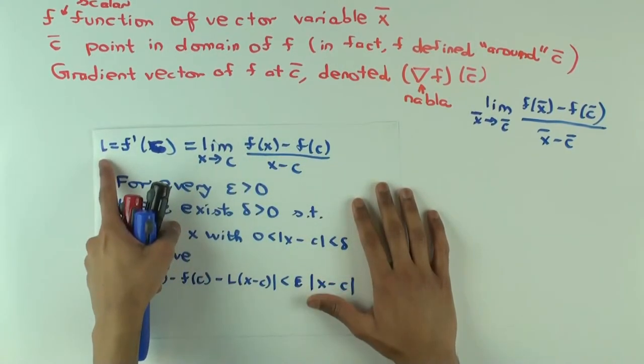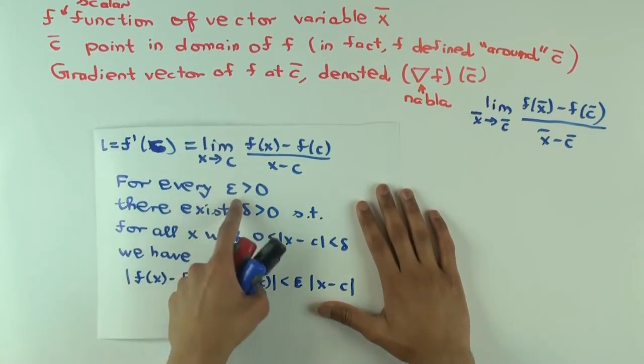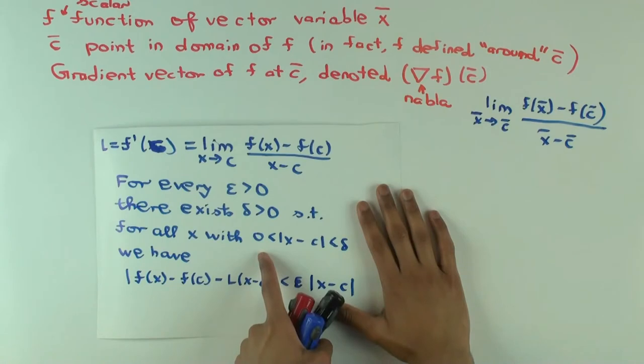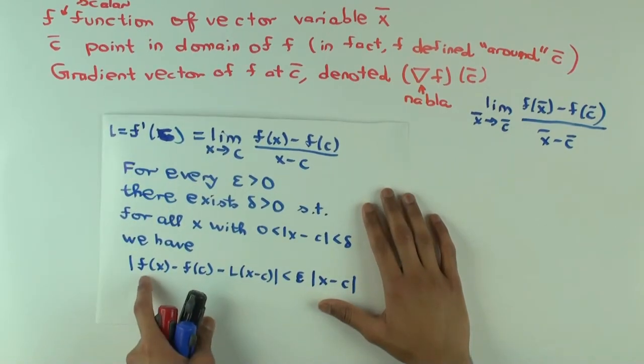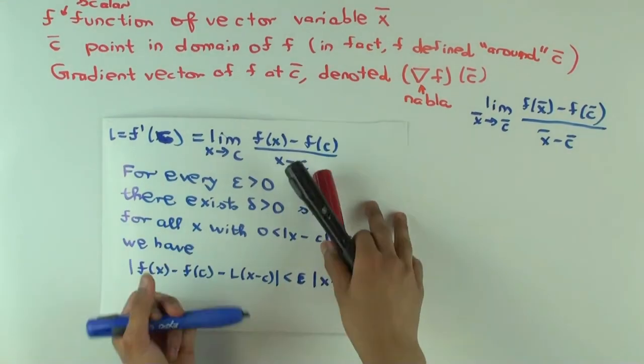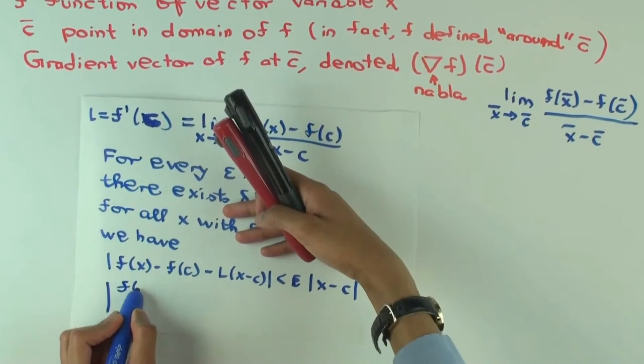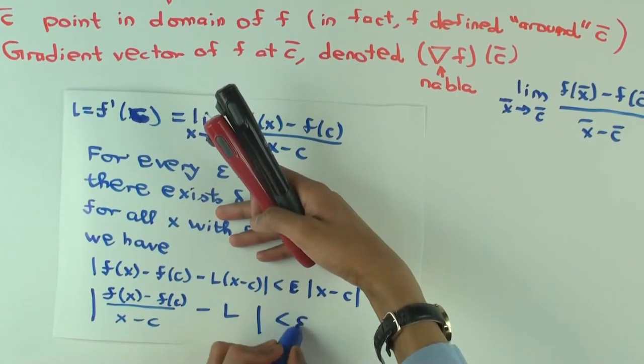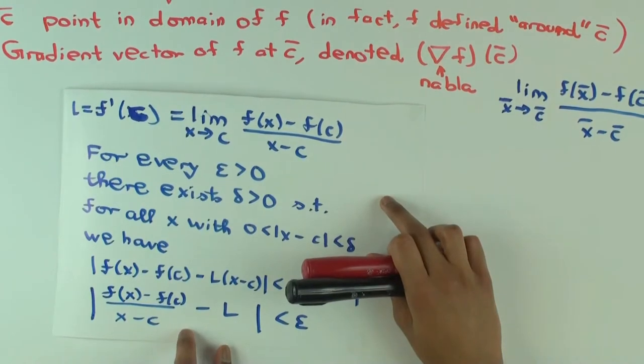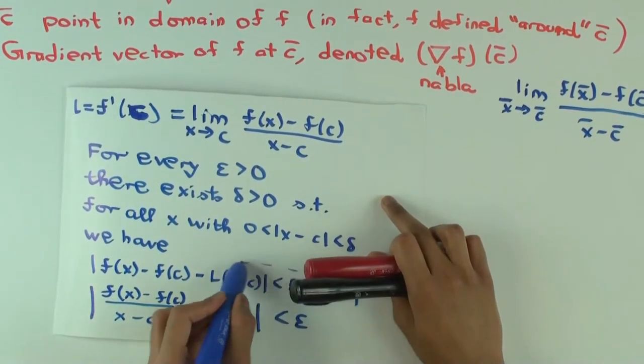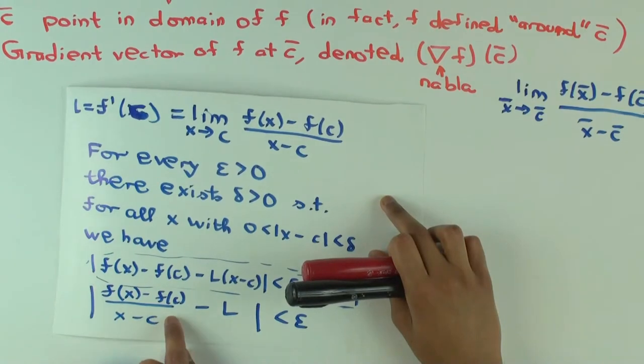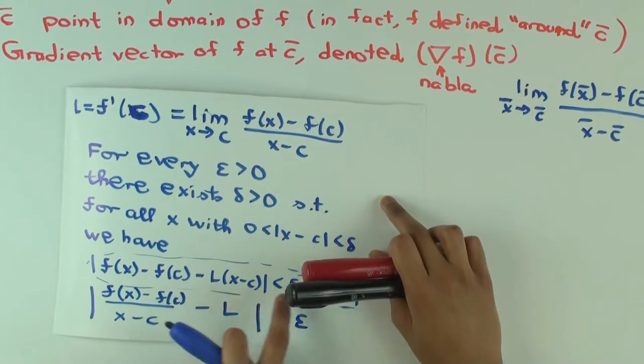And to say that this limit is L, what does that mean? Well, it means for every epsilon greater than 0, there exists delta greater than 0, such that for all x within delta of c, but not equal to c. We have what? So the original thing was f(x) minus f(c) over x minus c minus L is less than epsilon. That's what you would get if you directly applied the epsilon-delta definition, right? However, you can simplify that and get the thing on top here.